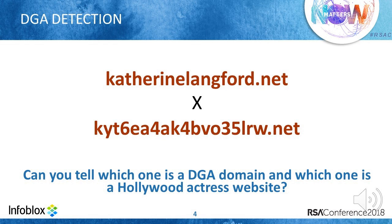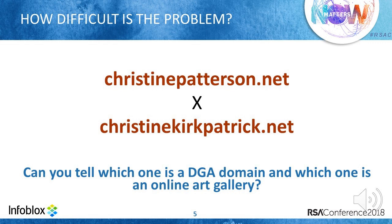But more recently, we started noticing another kind of DGA domain — domains algorithmically generated, but now the algorithms use a dictionary of words from the English language to generate domains. And the models that worked so well to differentiate good domains from bad domains failed when it came to detect this new kind of DGA domain. How can we differentiate bad domains that look so legitimate from benign domains using domain names as our only data source?